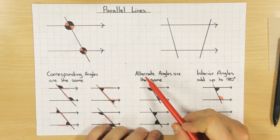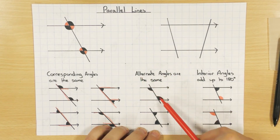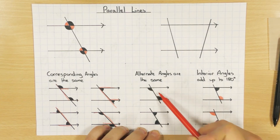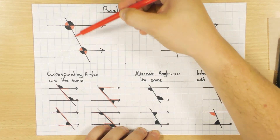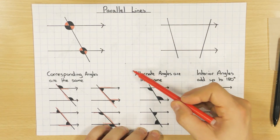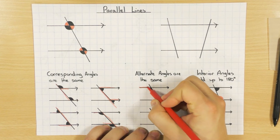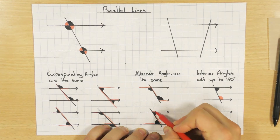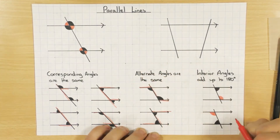The second rule is called the alternate rule — alternate angles are the same. Both angles are inside the parallel lines but on alternate sides of the transversal. You can use a Z-shape to help spot alternate angles, but the keyword to use is 'alternate'.